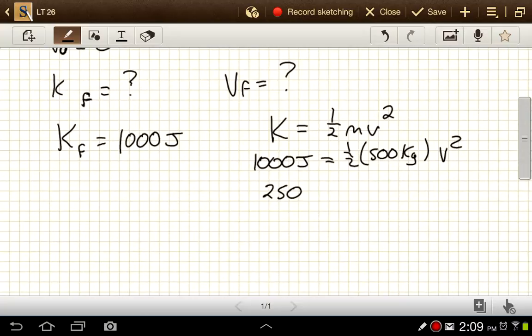And joules is an abbreviated unit for newton meters. And so it turns out when we divide newton meters by kilograms, since newton is another abbreviation for kilogram meter per second squared, we're going to end up with meters squared per second squared.